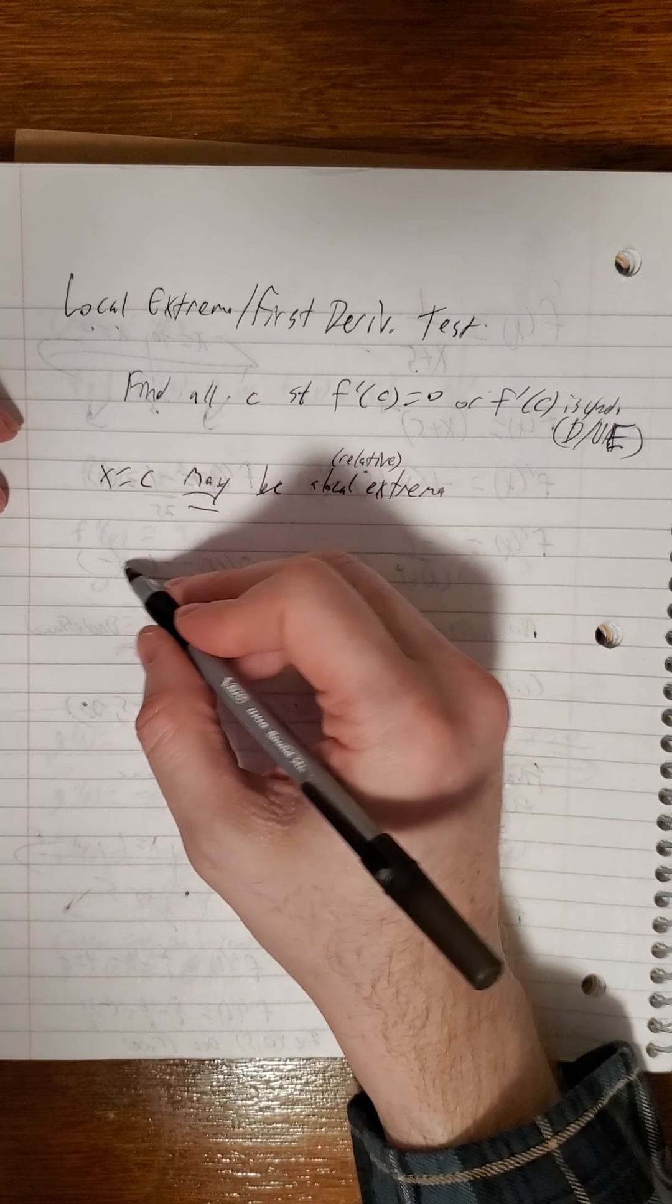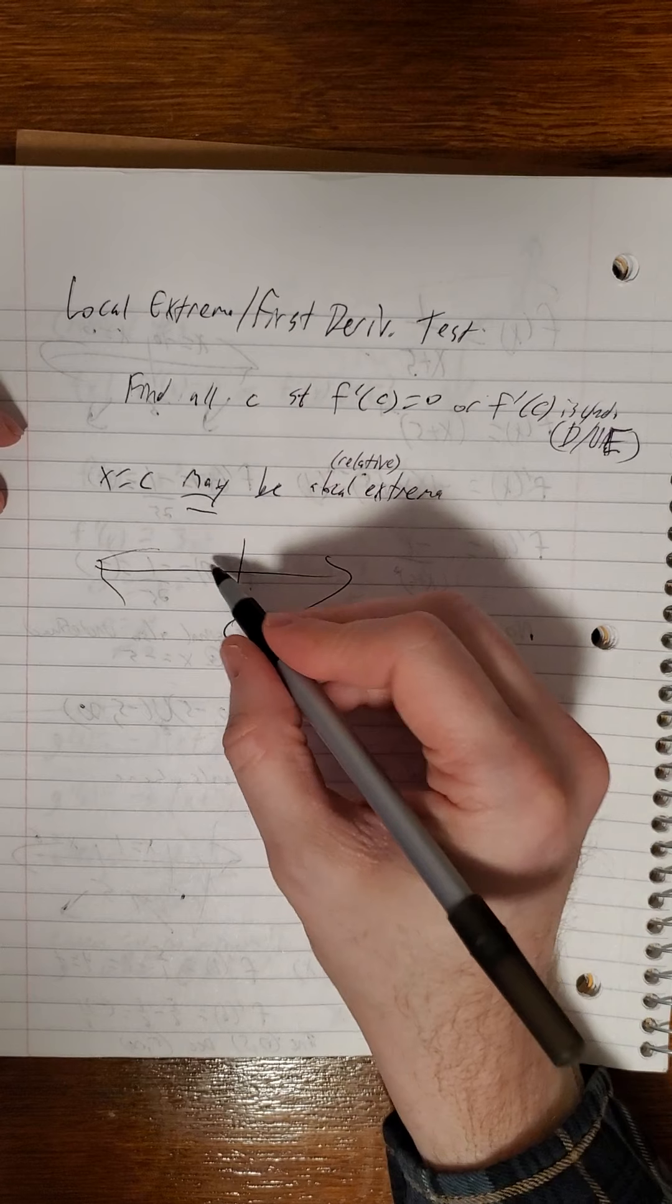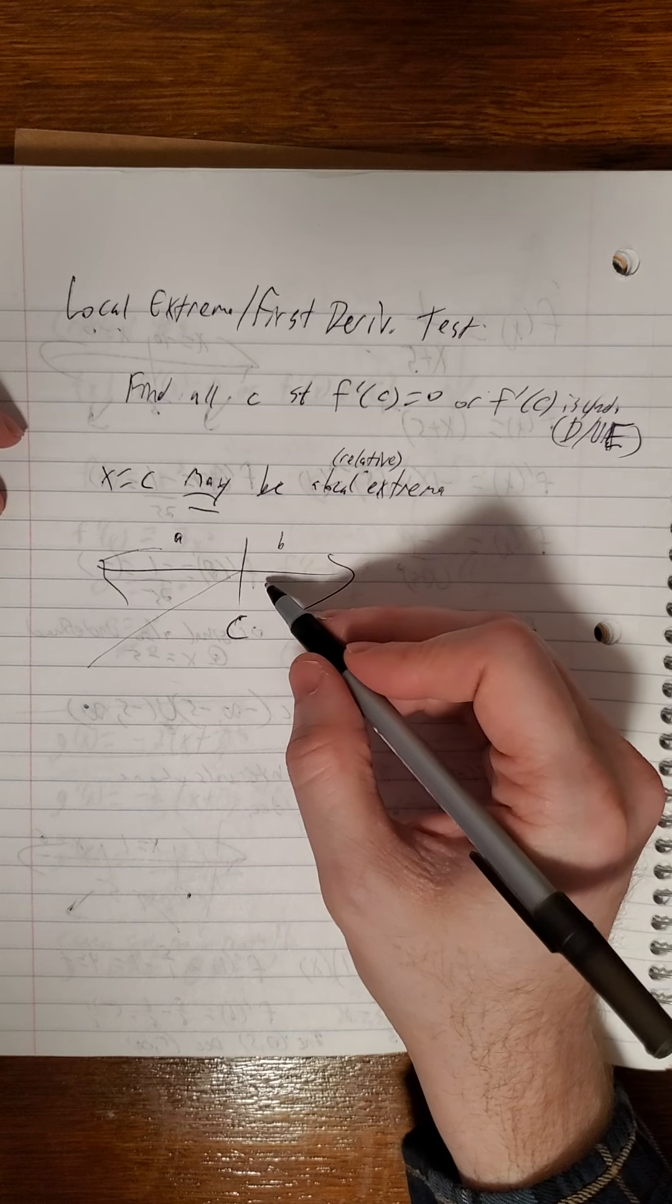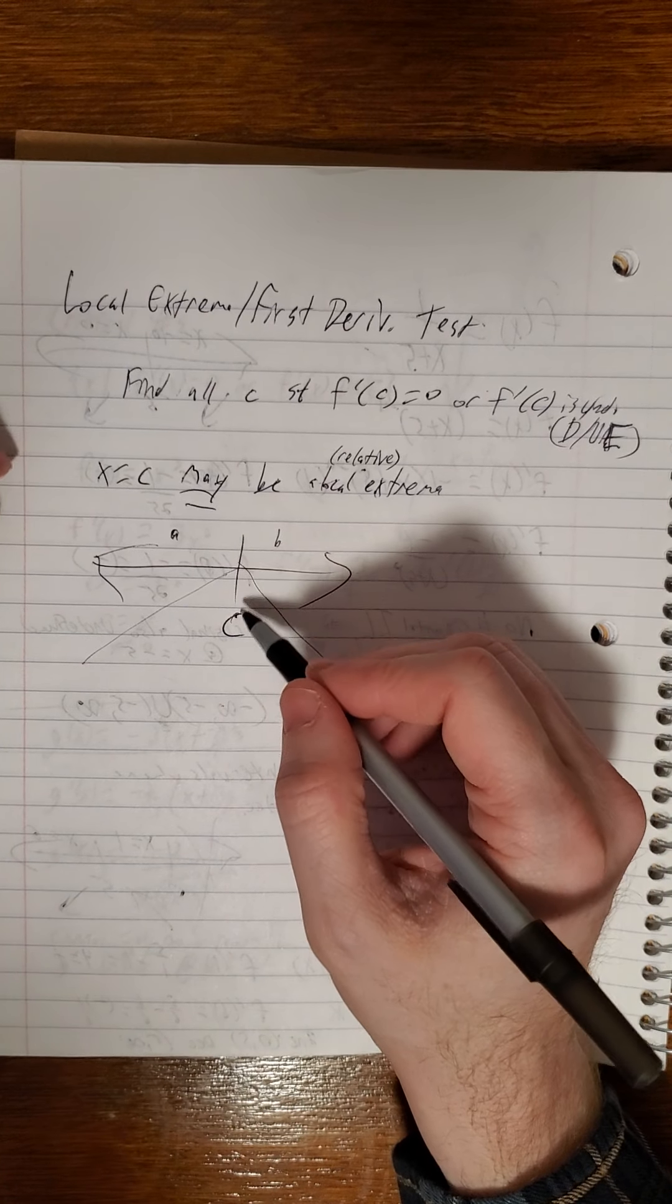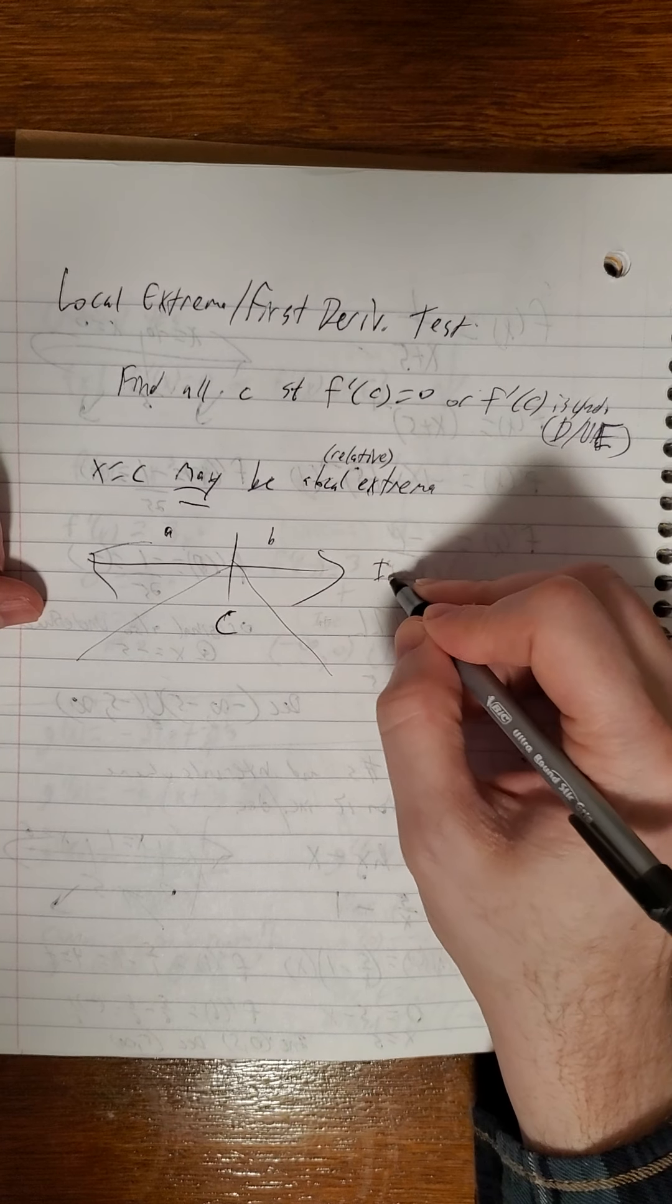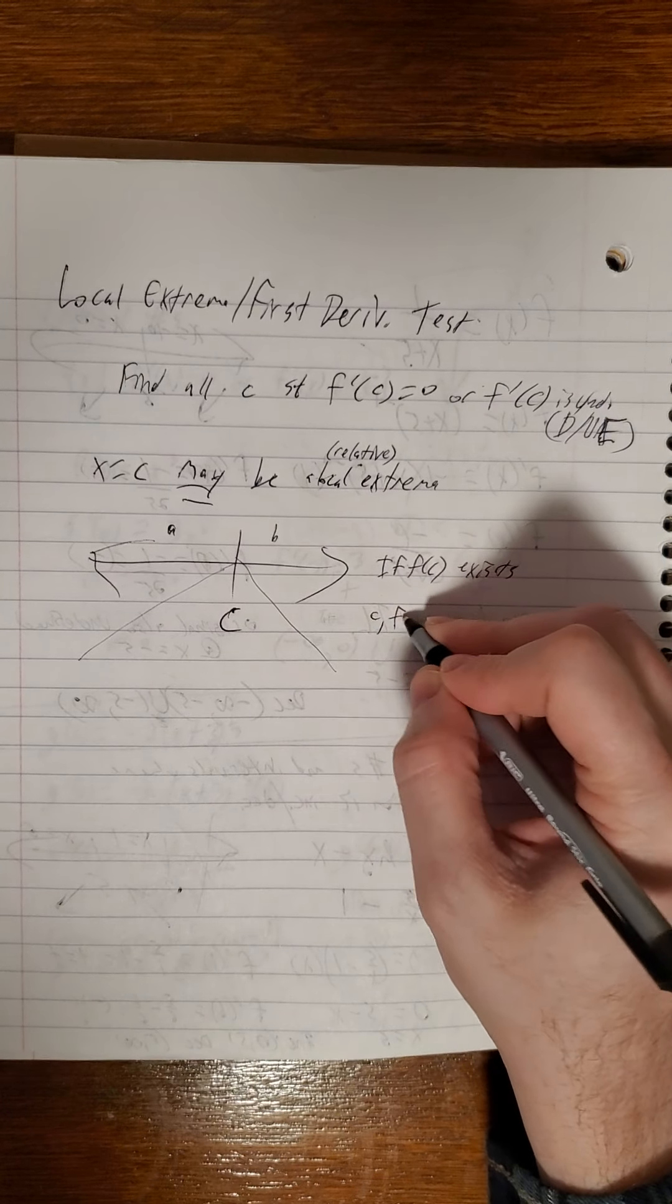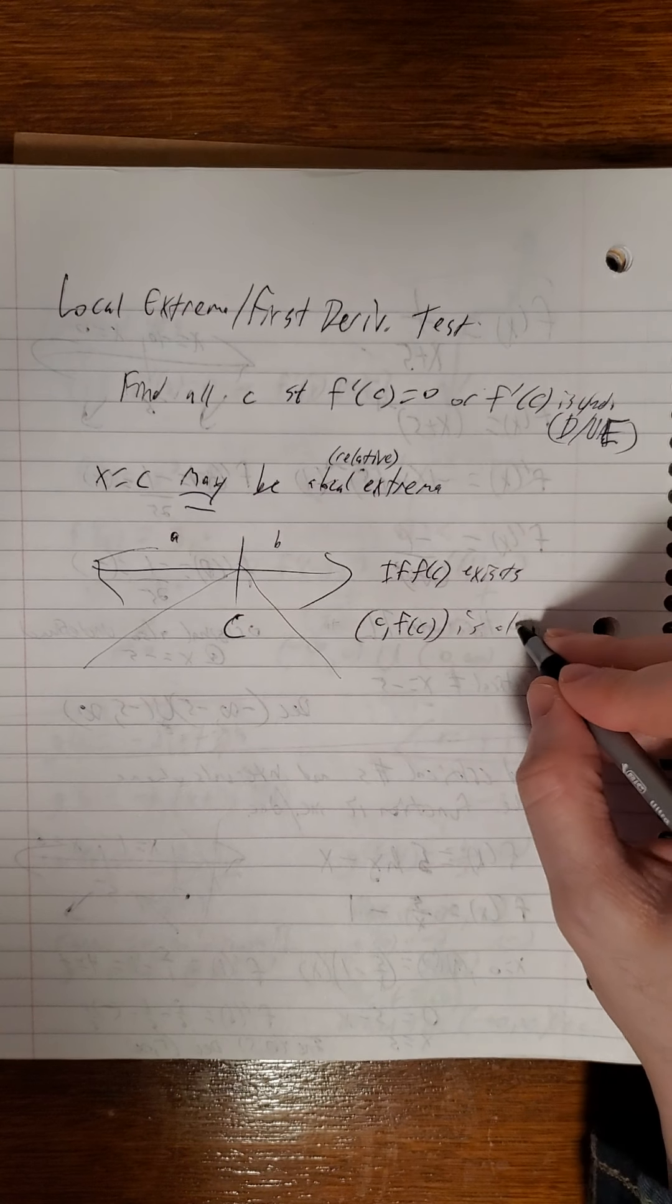x equals c may be a local extrema, also called relative extrema. We're not guaranteed. We're just saying it may be. And basically what we look at is, we'll just draw an arbitrary one here is c. We use test point a and test point b. If we find out that it's increasing at a and decreasing at b, then we have, as long as f of c exists, then c, f of c is a local max.